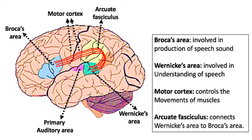Both of these language areas are rather complicated. However, the simplest way to think of them is that Broca's area, in the front of the brain, is more involved in producing language, and it is close to the motor cortex — the part of the brain that helps us control movement of our muscles, like when we speak. Wernicke's area is located near the auditory cortex and not too far from the visual cortex. We think of Wernicke's area more as a reception area, for understanding speech, whereas Broca's area is more for the production of speech.